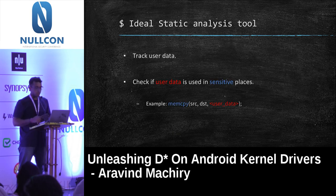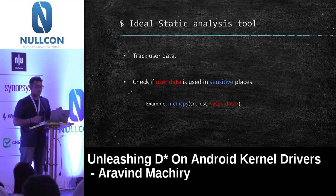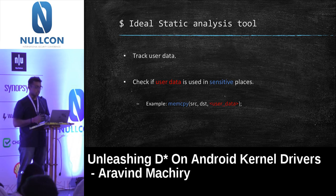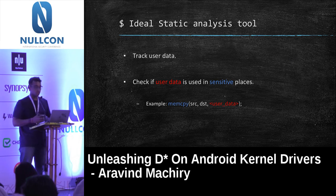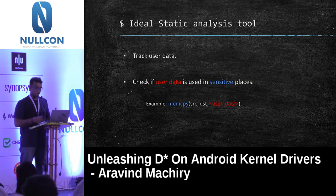What we ideally want from a static analysis tool is quite simple: track user data and see places where that user data can reach. If user data reaches sensitive places, it should raise a warning. A simple example is memcpy — if user data can reach the size argument of memcpy, it's a bug because you can easily get a buffer overflow.